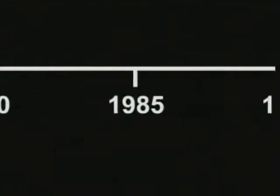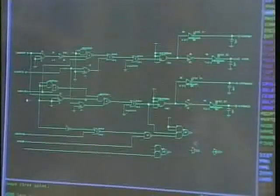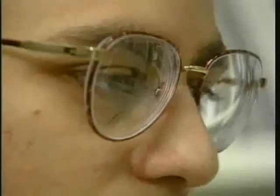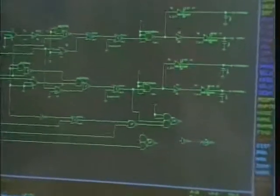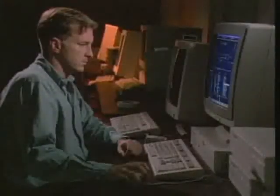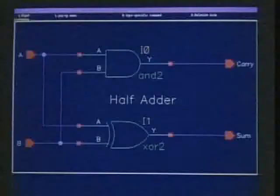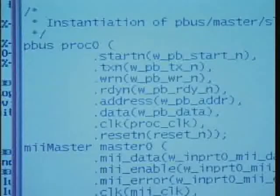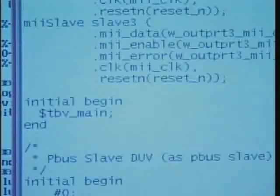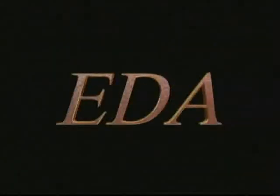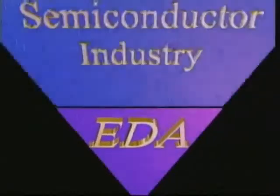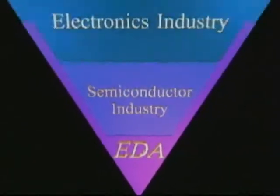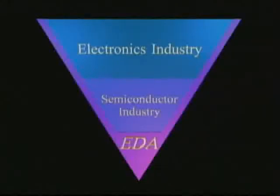Chip designers now had the tools they needed to automate the schematic designs and simulate the signal's flow. By the mid-80s, the complexity of the designs reached new heights. To meet this challenge, new software was designed to introduce higher levels of abstraction. Designers could now work with the function performed by groups of transistors known as logic gates, and they could use a computer language rather than complex drawings to describe them. Computer-aided design was soon replaced by electronic design automation.